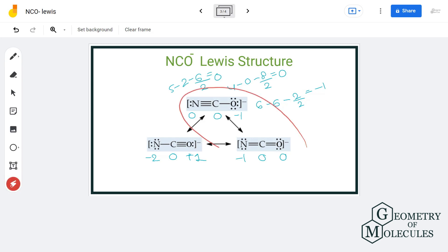Now these two structures are the most ideal Lewis structures because of the minimal formal charge and among these two, this one here is the most stable structure because here negative charge is on more electronegative element that is oxygen rather than on nitrogen.